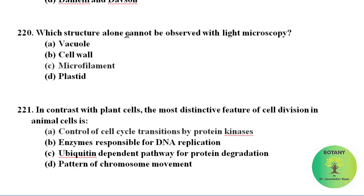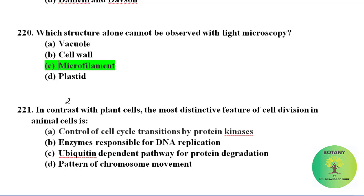Which structure alone cannot be observed with a light microscope? Among these, vacuoles, cell wall, and plastids can be observed by light microscope. Microfilaments are visible only under the electron microscope, not the light microscope.